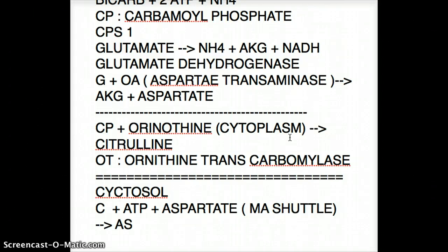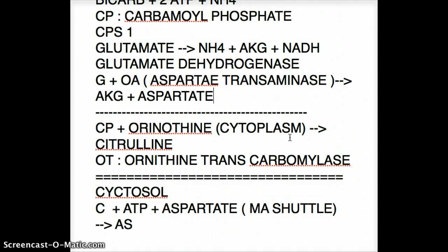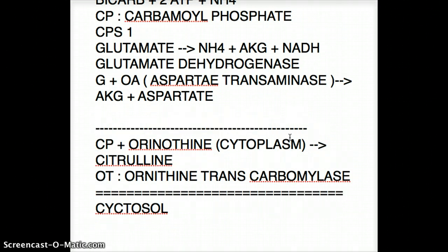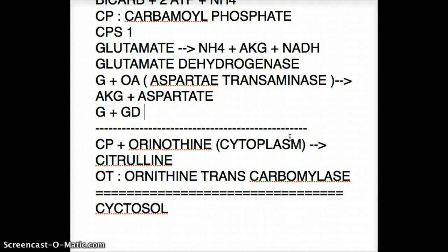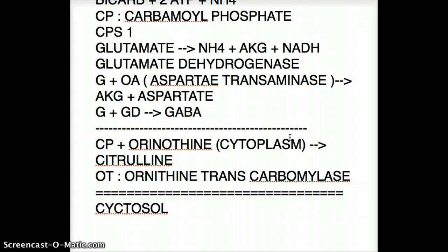Please visit my blog if you want these notes, and subscribe or like this video for encouragement. One more thing: glutamate can also become GABA using the enzyme glutamate decarboxylase. I'll see you in my next video where I talk about the disease associations with the urea cycle.